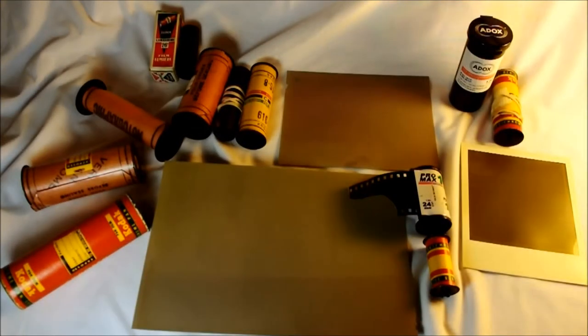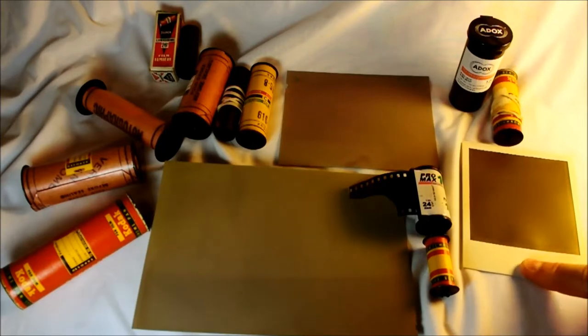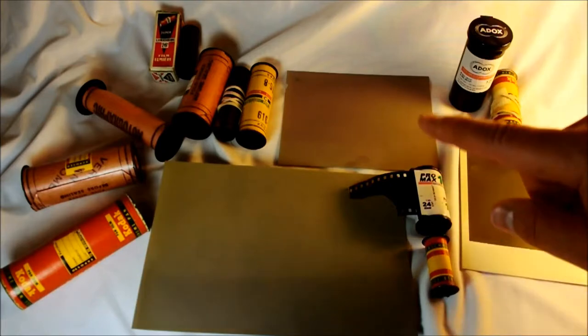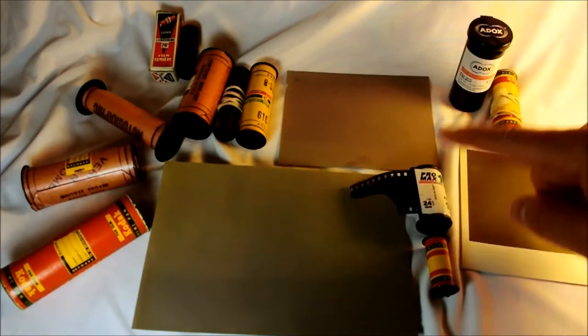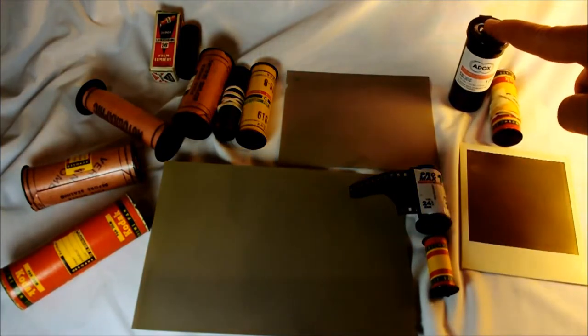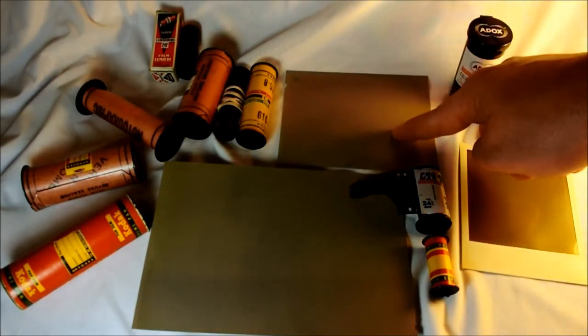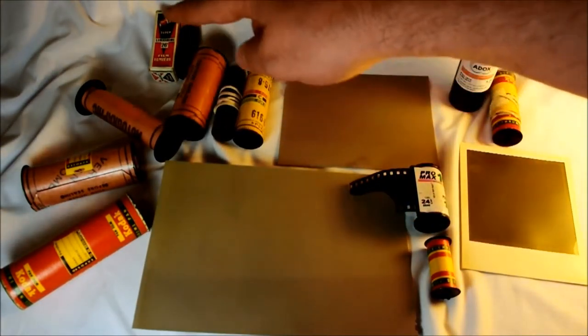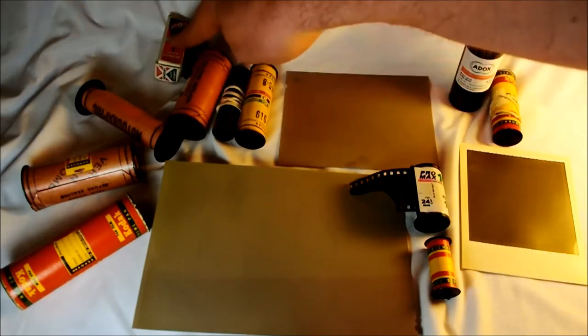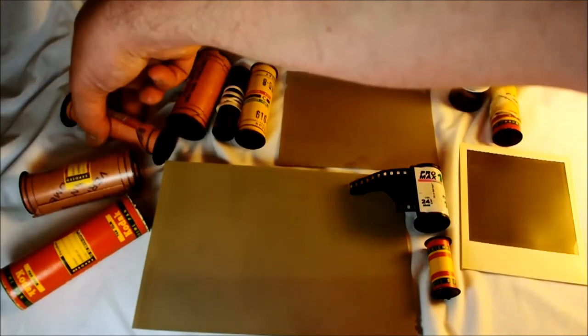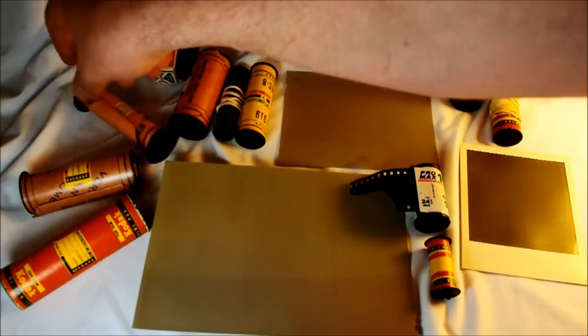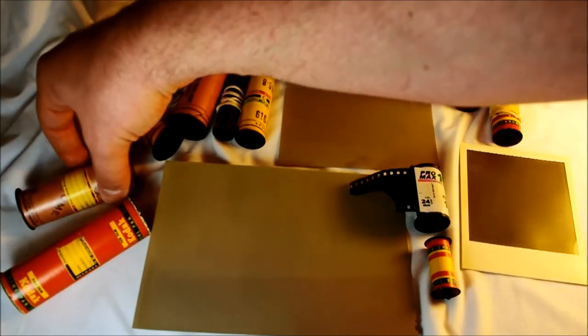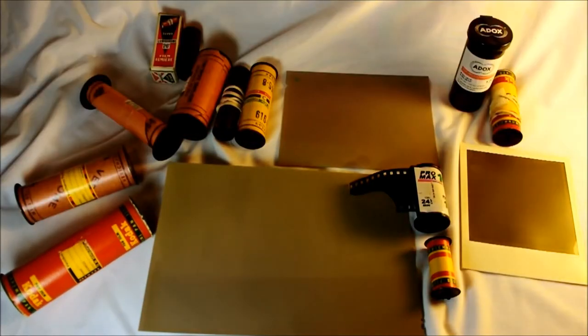Okay, so starting right here: this is Polaroid film, this is 828, 35 millimeter, 620, 120, 4x5, 5x7, 616, 116, 127, 120, 118. Right here this is 130, and this is 122.